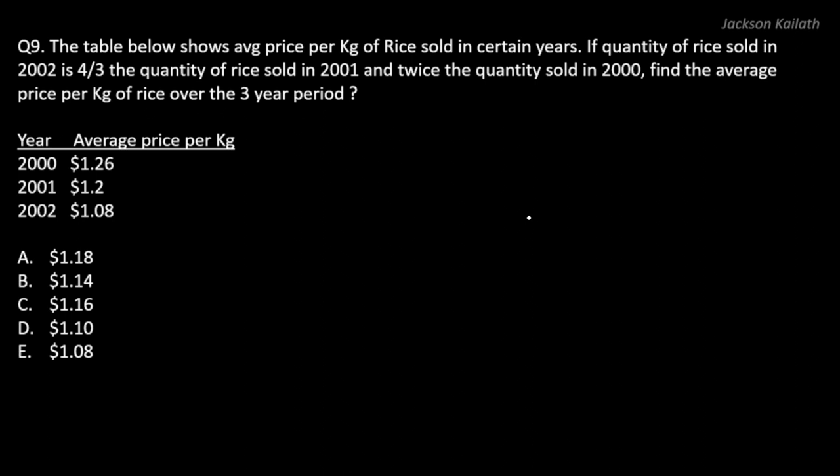The table below shows average price per kilogram of rice sold in certain years. If quantity of rice sold in 2002 is 4/3 the quantity of rice sold in 2001 and twice the quantity sold in 2000, find the average price per kilogram of rice over the three-year period.